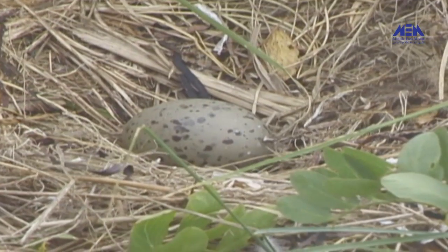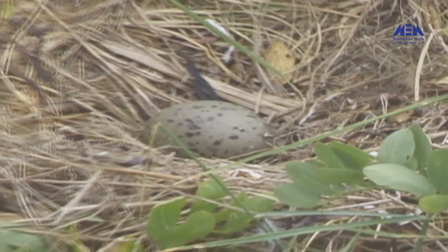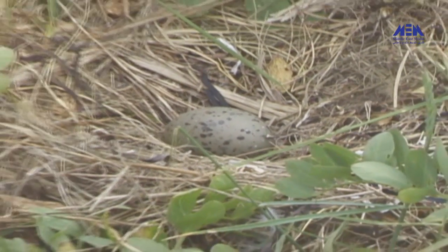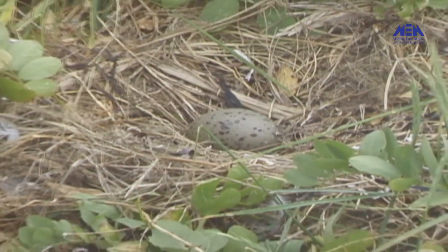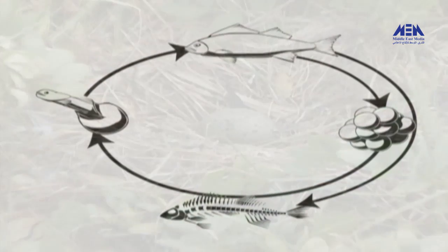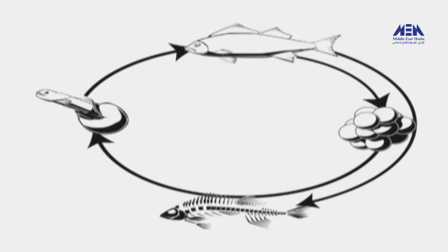Each living thing has its own particular life cycle. But most living things follow the same general pattern of birth, growth, reproduction, and death.